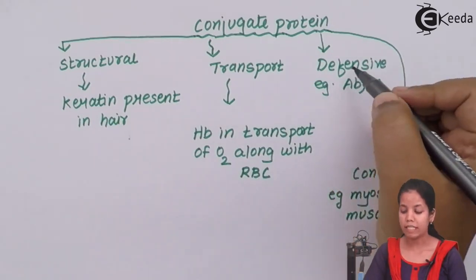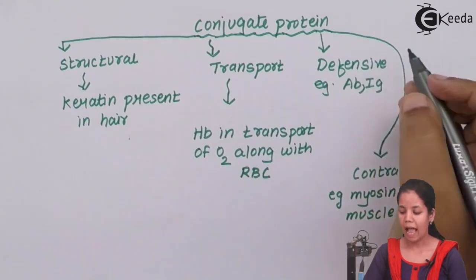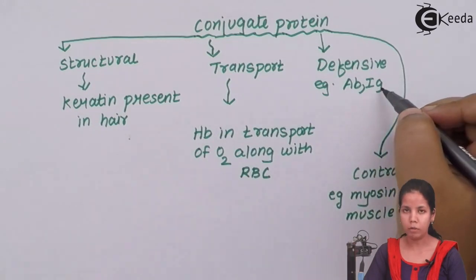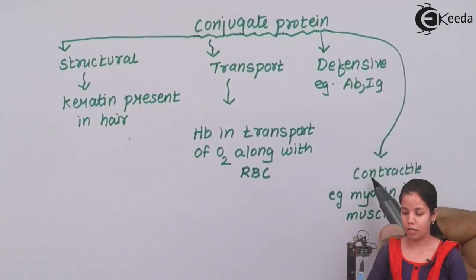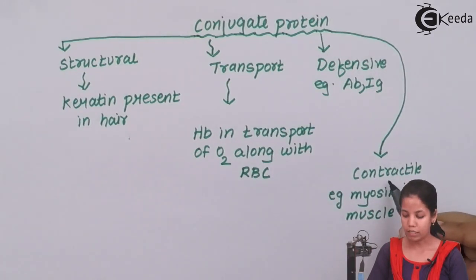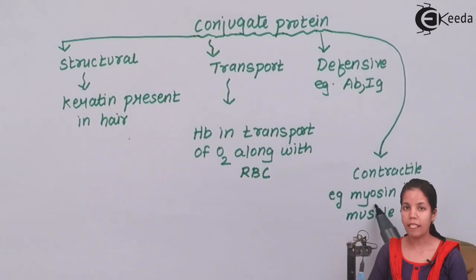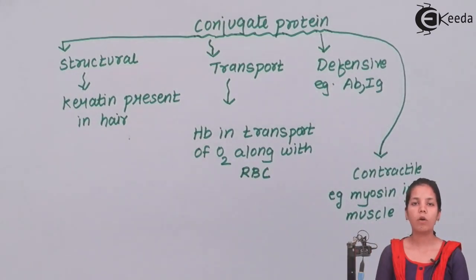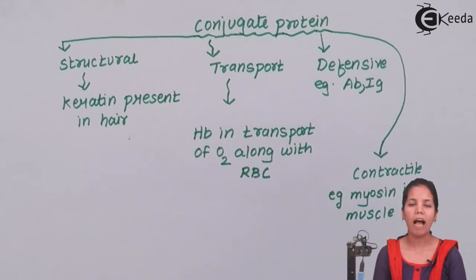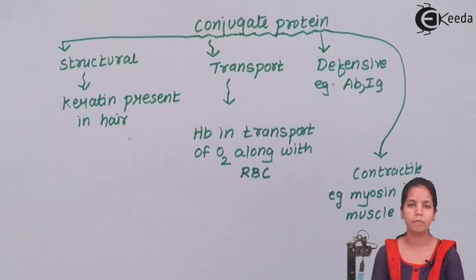Another type of protein is defensive protein. An example is antibodies, or immunoglobulins, which protect human beings against infections or certain diseases. The last type of protein is contractile protein — an example is myosin, present inside muscles, which helps in contraction and relaxation of muscles. In this part of the chapter we have studied various types of proteins and how they function. I hope you are all clear about the various types of proteins and their functions. Thank you.